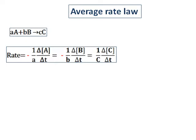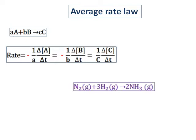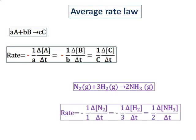Let's apply this to one reaction. Nitrogen gas combines with hydrogen gas to give you ammonia. The rate of the reaction in terms of nitrogen will be change in concentration of nitrogen with change in time, divided by the stoichiometry of 1. That equals the change in concentration of hydrogen divided by delta T, divided by 3, because we have 3 hydrogens. And in terms of the product ammonia, we get delta NH₃ divided by delta T, divided by 2, because 2 is the stoichiometry for ammonia.